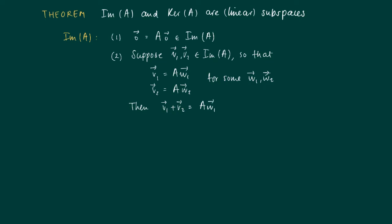This is seen using linearity of the matrix and summation. So v1 plus v2 equals A times w1 plus A times w2, and we factor out the matrix multiplication since this equals A times the sum w1 plus w2. So the image of w1 plus w2 is v1 plus v2, meaning v1 plus v2 is also in the image of the matrix.